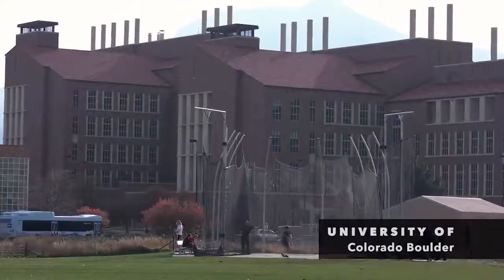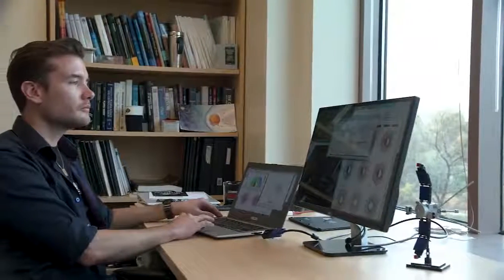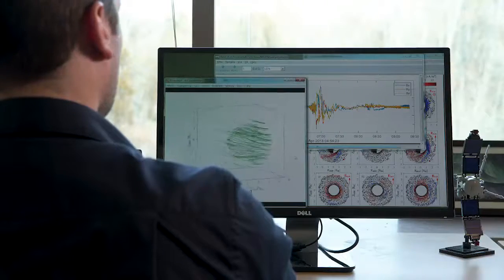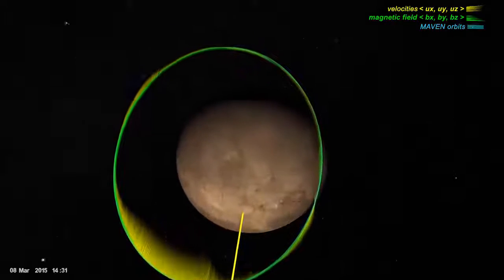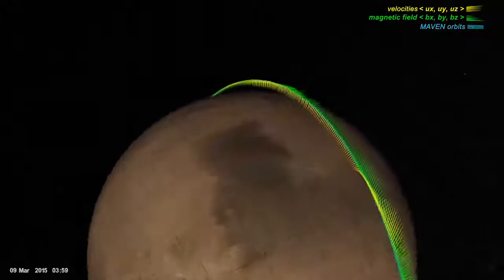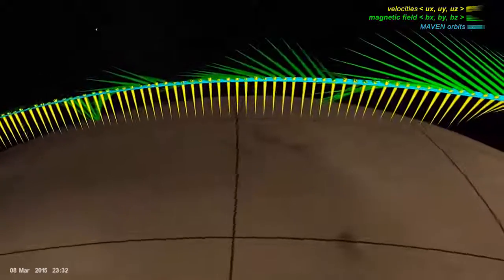When you just look at the data as it comes down, you're just seeing a little squiggly line essentially. You're seeing that magnetic field strength and its direction vary as the spacecraft is flying through different regions. So what you have to do is you have to actually map it to the planet and to this interaction with the solar wind.